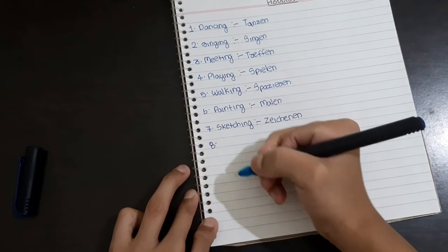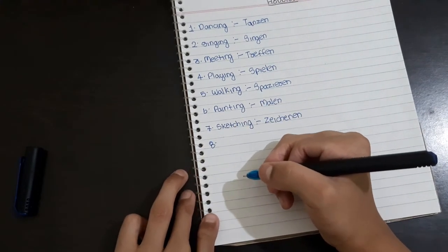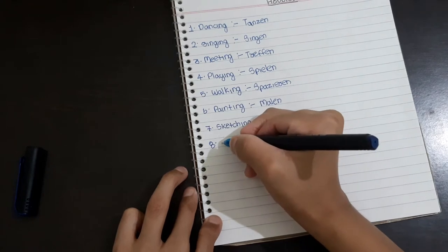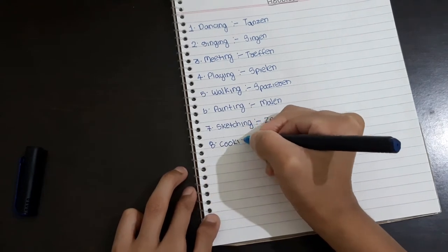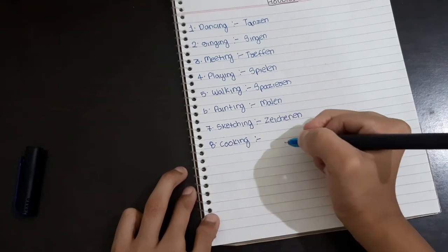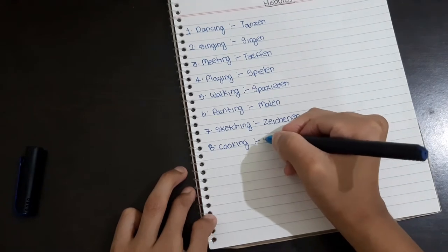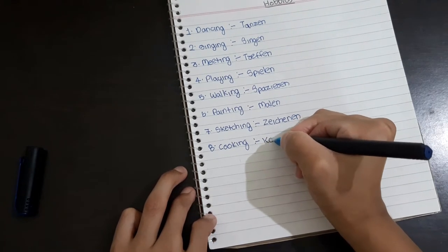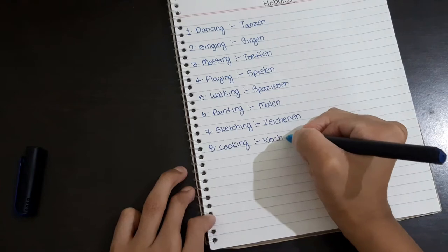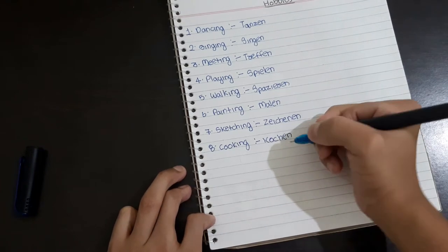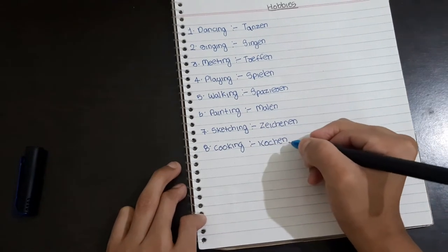And the eighth one is cooking. Cooking means Kochen. The spelling of Kochen is K-O-C-H-E-N.